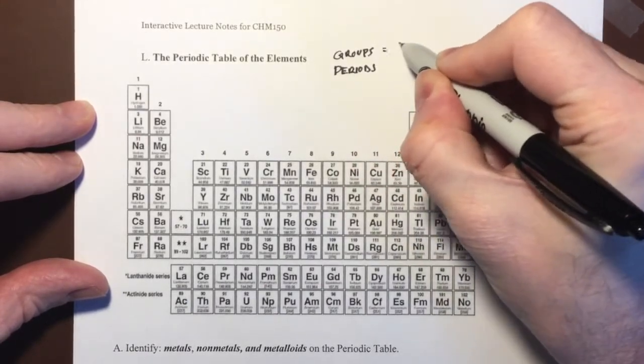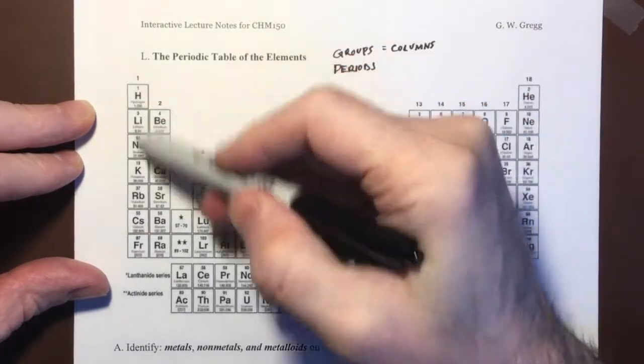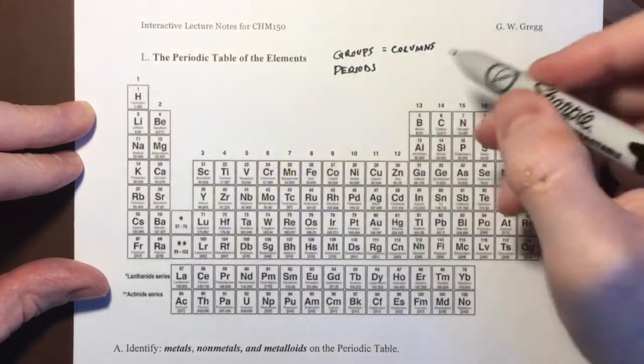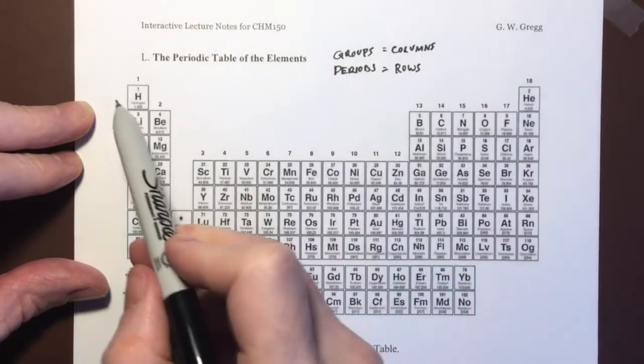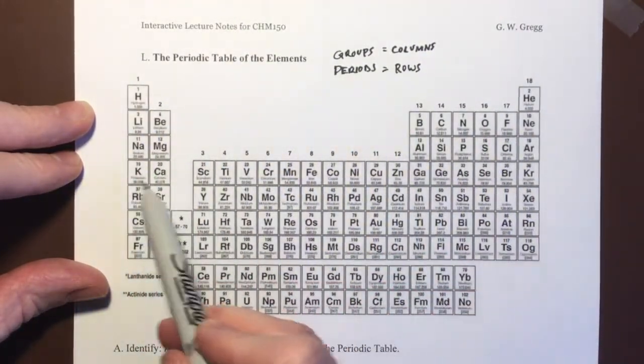Groups are the columns, so this is group one, group two, group three, group four, group five, group six and so on. The periods are the rows, so we can say this is in the first period, the second period, the third period and so forth.